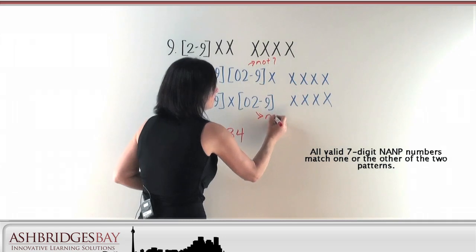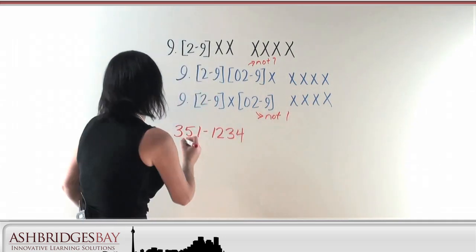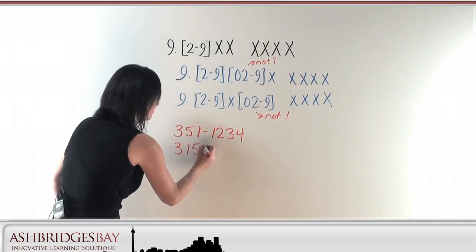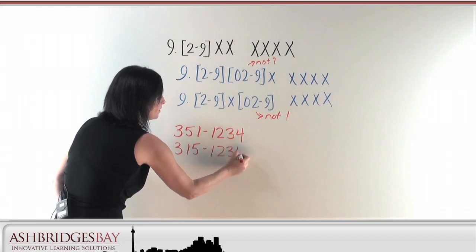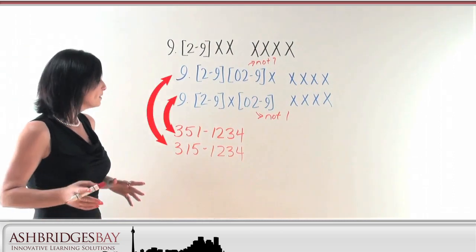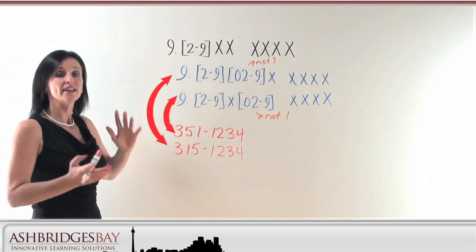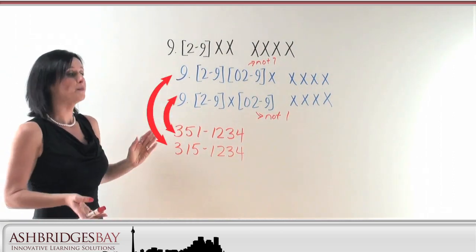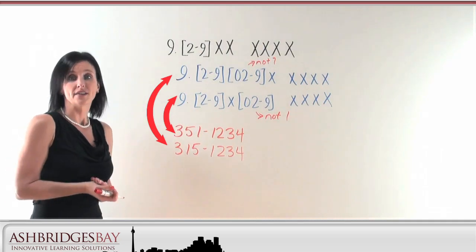So I can dial 3-5-1-1-2-3-4, that works. Here we've replaced the third number. This is not 1. We would have 3-1-5-1-2-3-4, and those are both valid numbers in the North American numbering plan. So this way we've solved our problem of having a delay when we dial 4-1-1, 5-1-1, and so on.